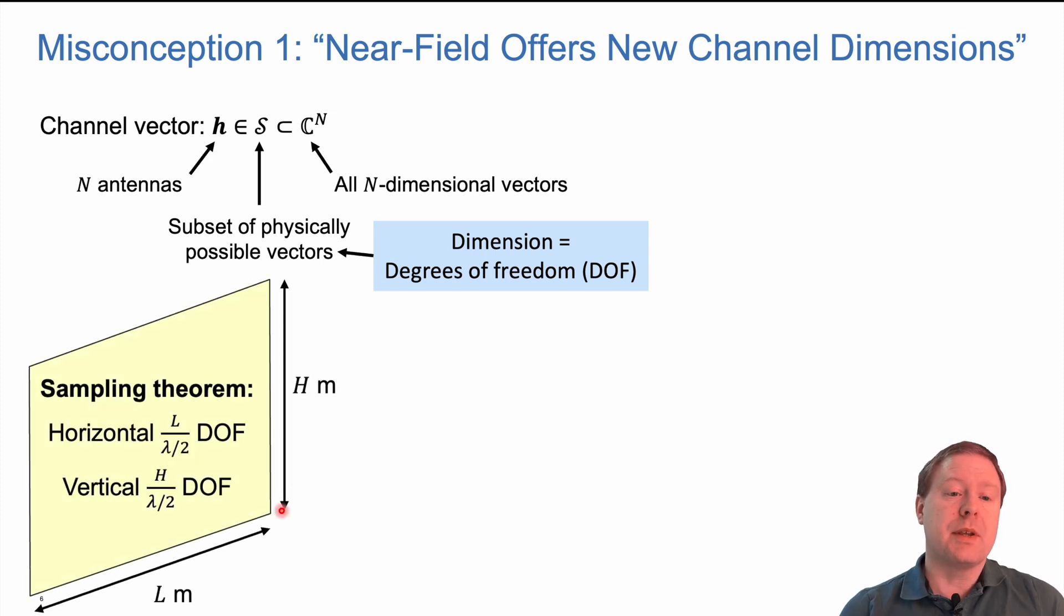From the sampling theorem, we can figure out how large the degrees of freedom can be for an array of a particular size l by h. The sampling theorem says that if we put out antennas with half a wavelength apart, lambda over two, then we take the length divided by that, which is the number of horizontal degrees of freedom we can resolve. Vertically, we take the height divided by lambda over two for the vertical degrees of freedom. If you multiply these together, we get the number that could be the total degrees of freedom that this channel can be spanning.